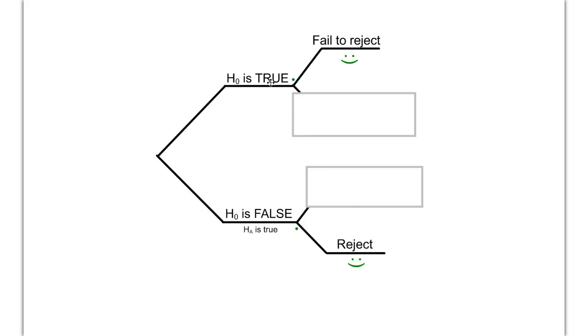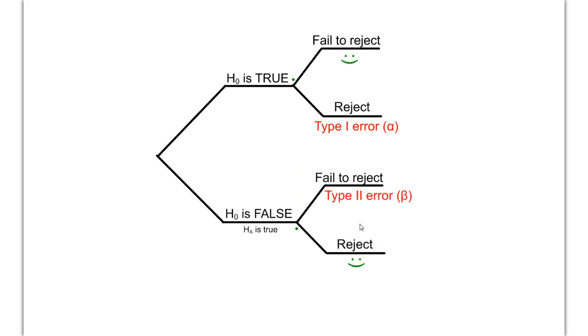Now, going back up top, if it's true and we reject a true thing, we've made a type 1 error. And if something is not true, if something is false, and we don't reject that false thing, we've made a type 2 error. So, that's just another way of looking at that information.